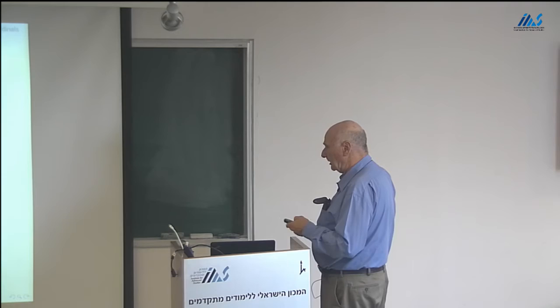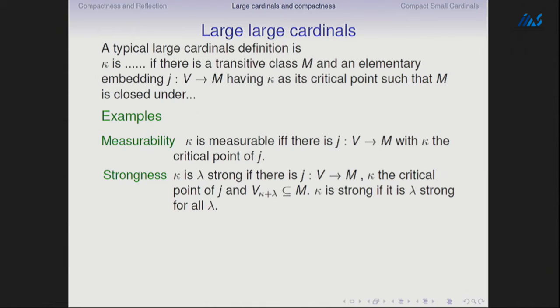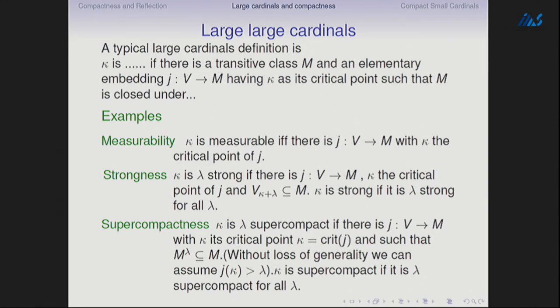Strongness: κ is λ-strong if there is J: V → M with κ the critical point and V_{κ+λ} ⊂ M. Sometimes the notation uses V_λ rather than V_{κ+λ}, but let's use this notation. κ is strong if it is λ-strong for all λ — for each λ you get a separate embedding, necessarily so because of Kunen's result that there is no embedding from the universe to itself.